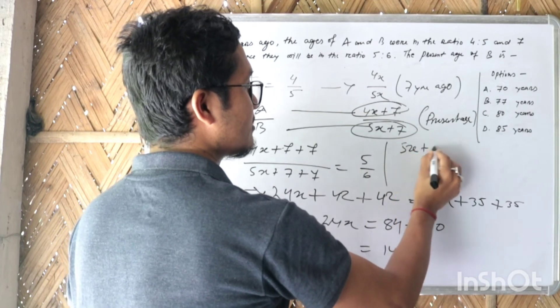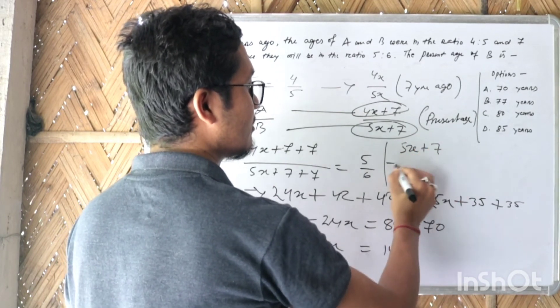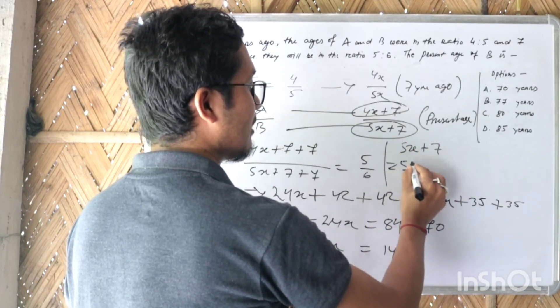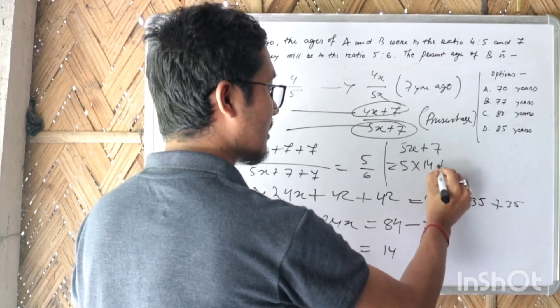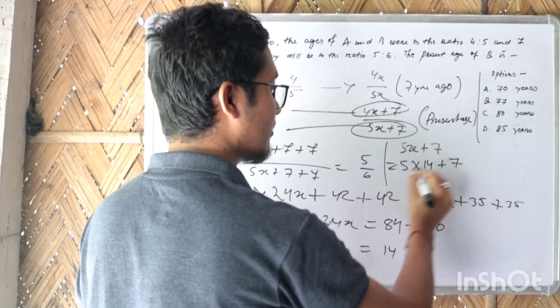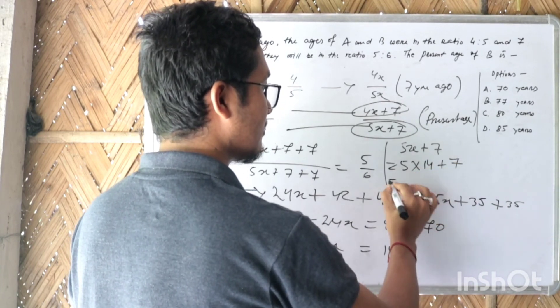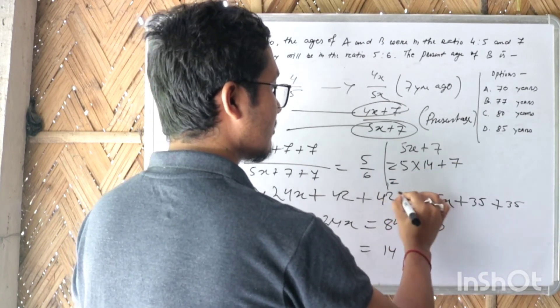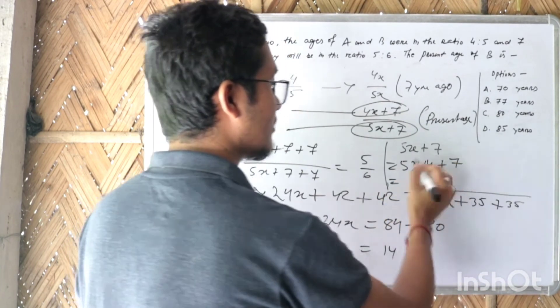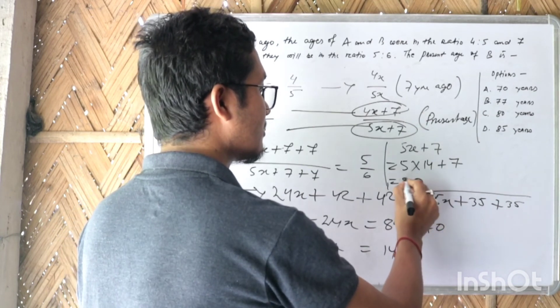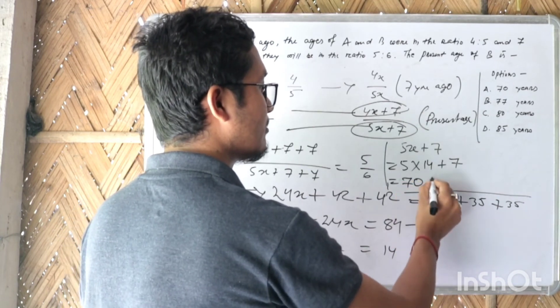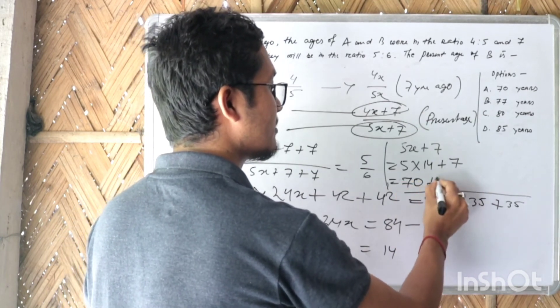So the present age of B is 5x plus 7. With x equal to 14, we get 5 into 14 plus 7, which gives 70 plus 7 equals 77.